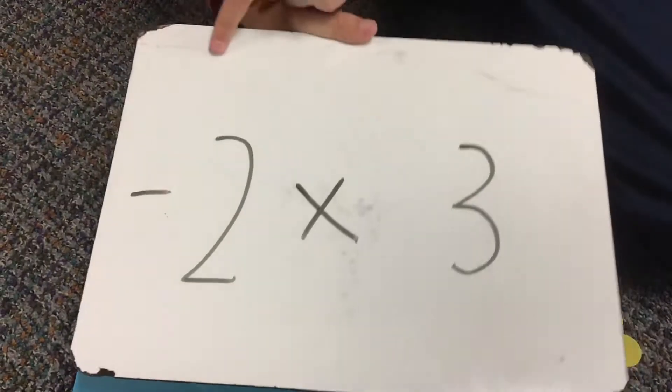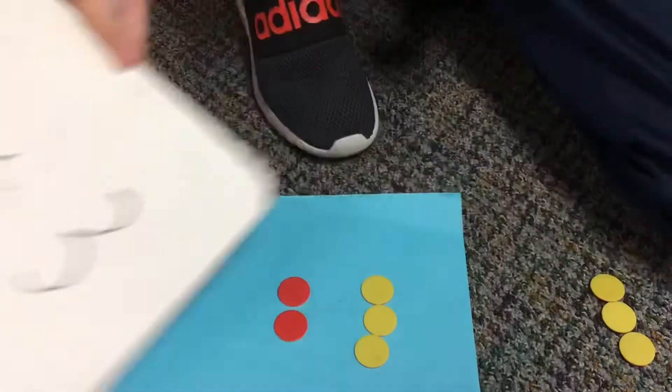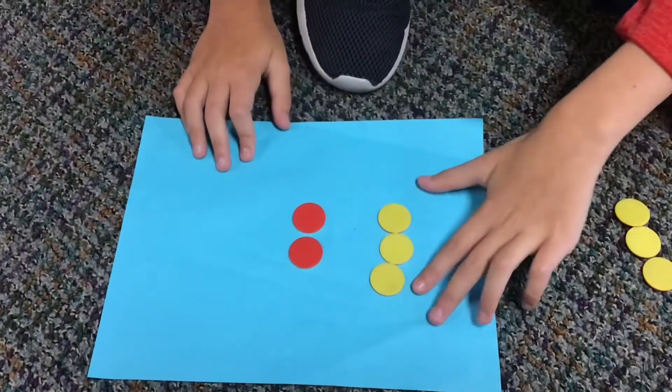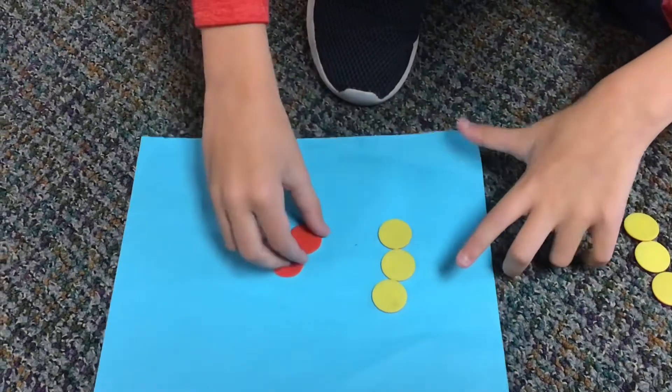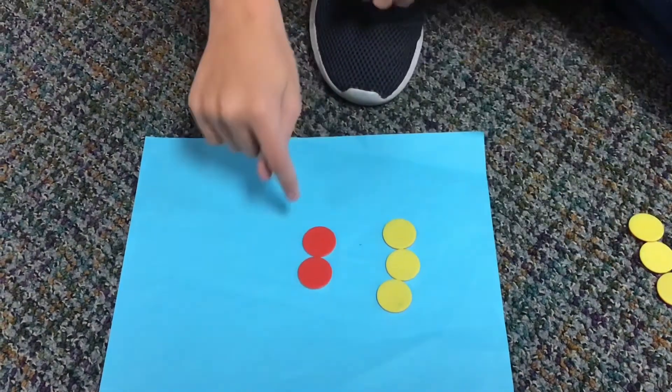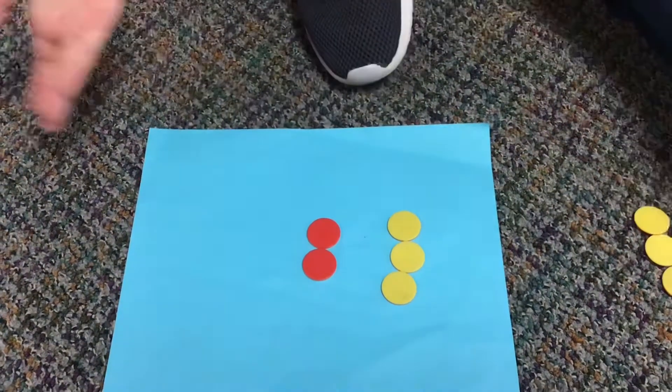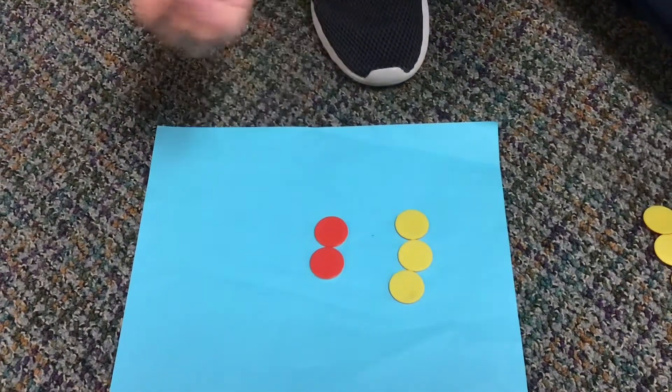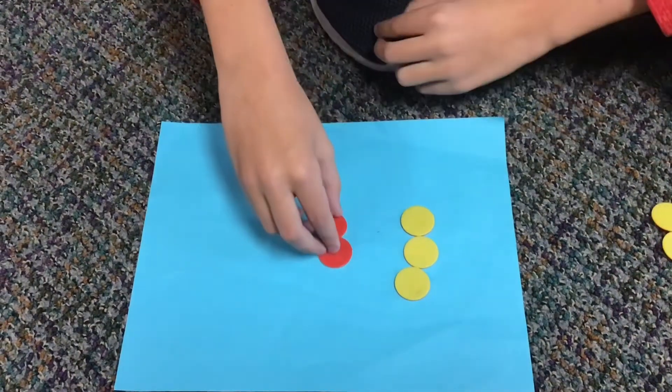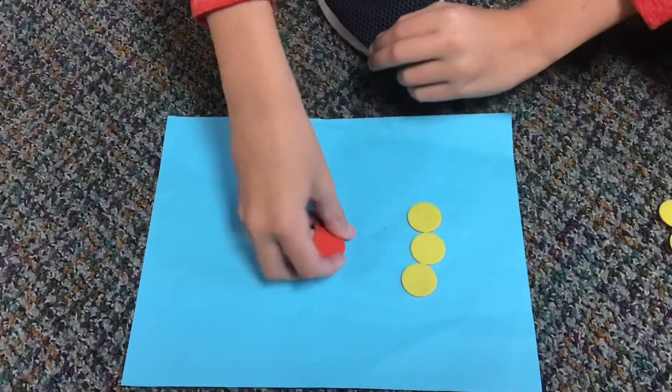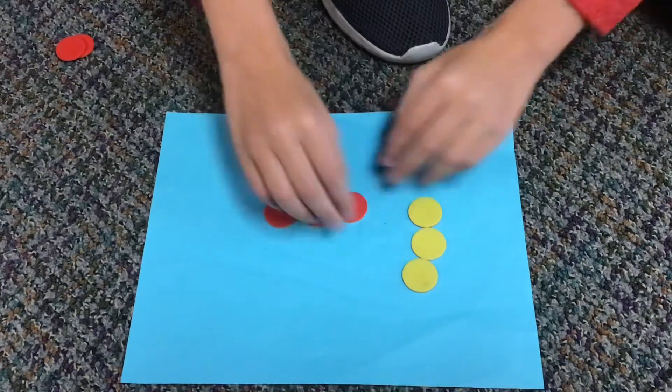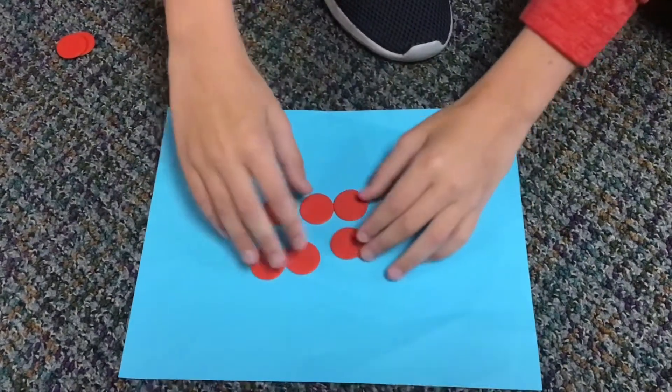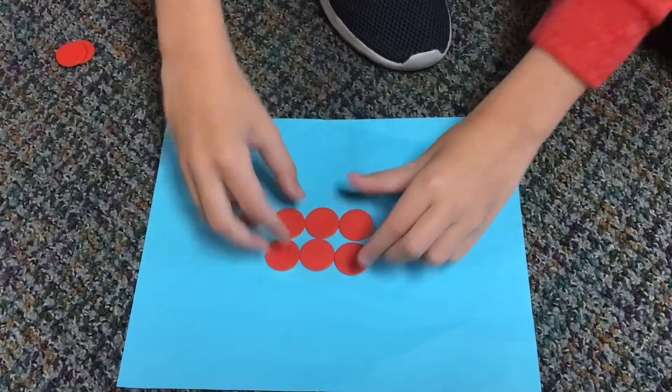For our next problem we have negative 2 times positive 3. Here we have the positive 3, and then we have negative 2. Since these are different signs—one's negative, one's positive—it's a bad day, so the number is going to be negative. We take 2 times 3, and you get negative 6 because it's a bad day.